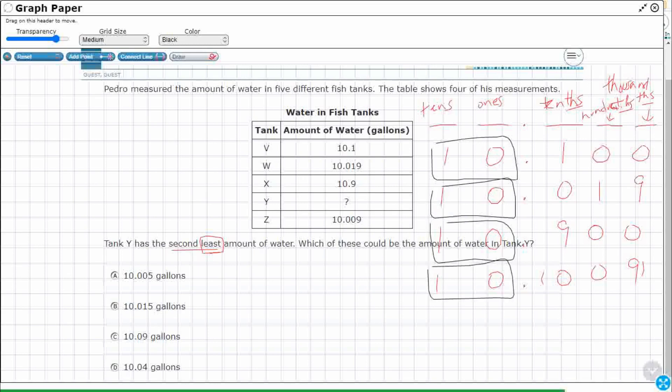I'm looking at what do I see in my decimal places. I've got 100. So, that's what we're comparing. I've got my 100, 19, 900, and I've got this nine.